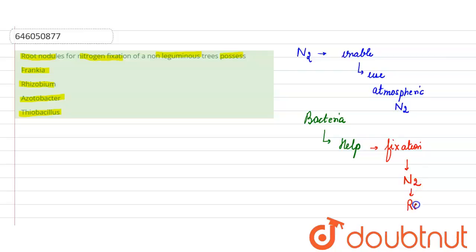So they have root nodules, and in that root nodules there is a presence of bacteria named as Rhizobium. Students, Rhizobium is a bacteria which help in nitrogen fixation.